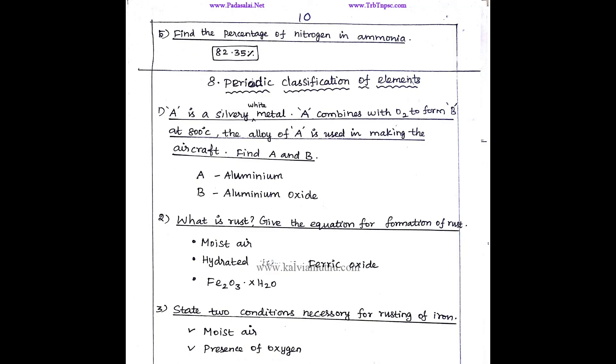Find the percentage of nitrogen in ammonia. 82.35% of nitrogen is present in ammonia.